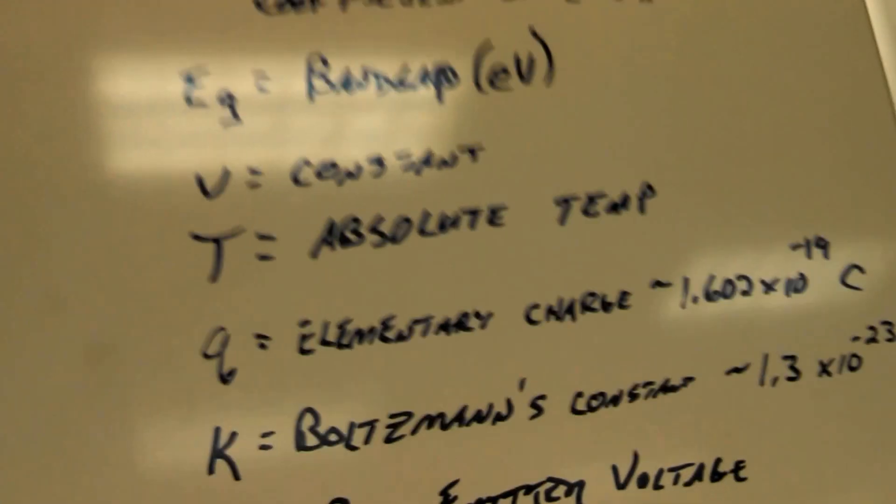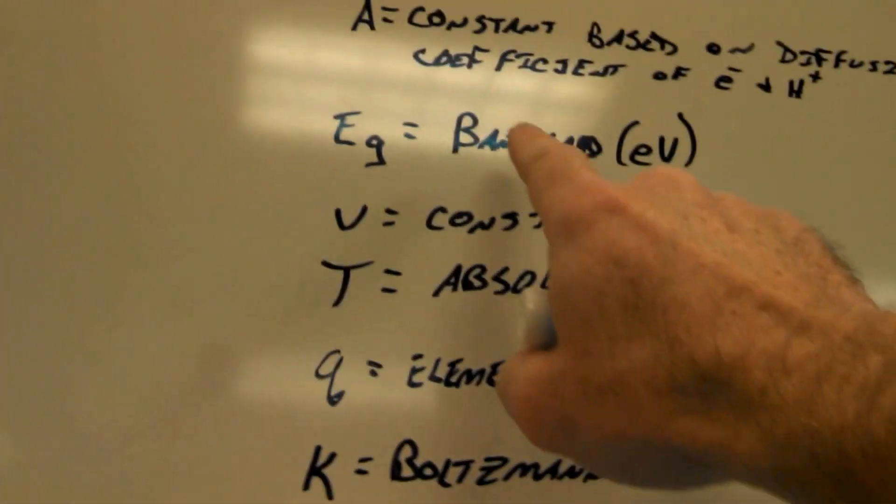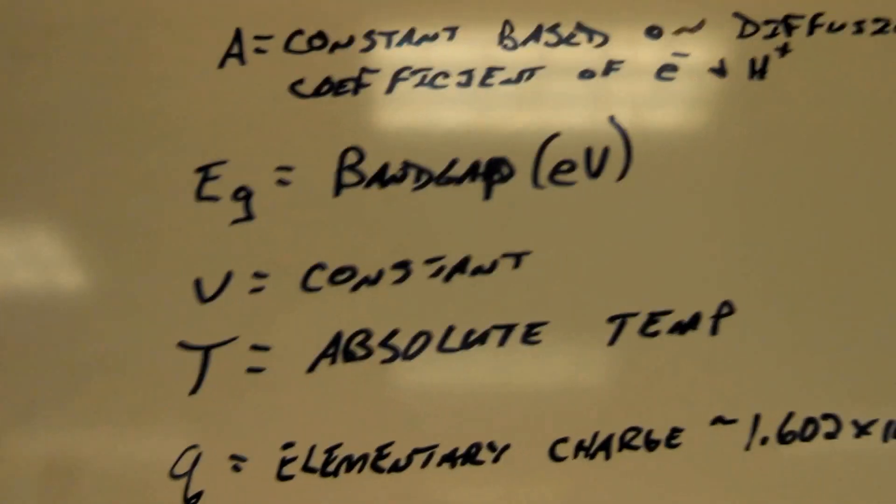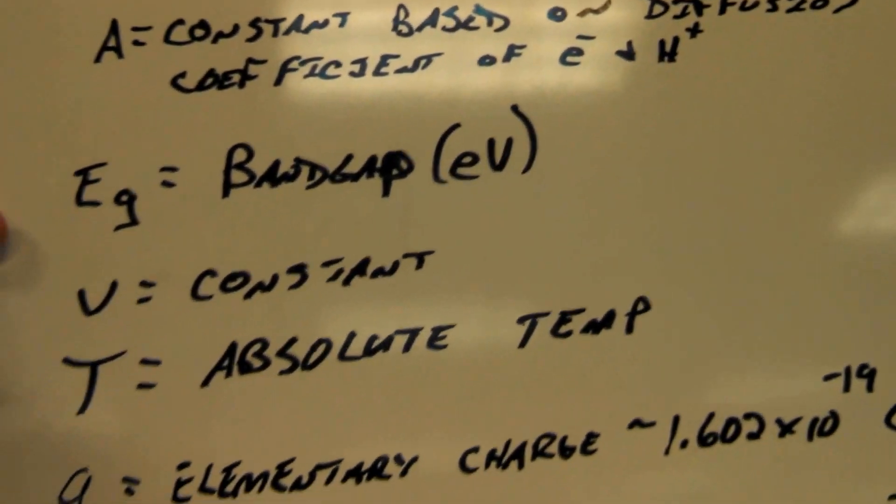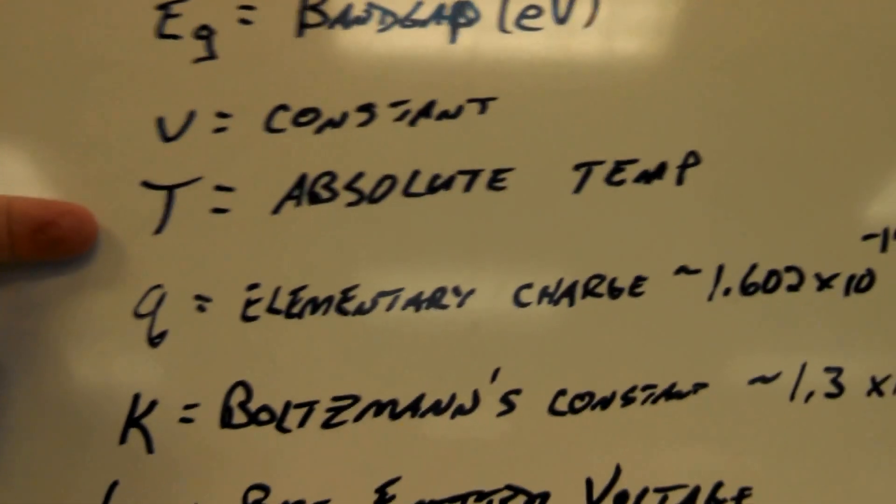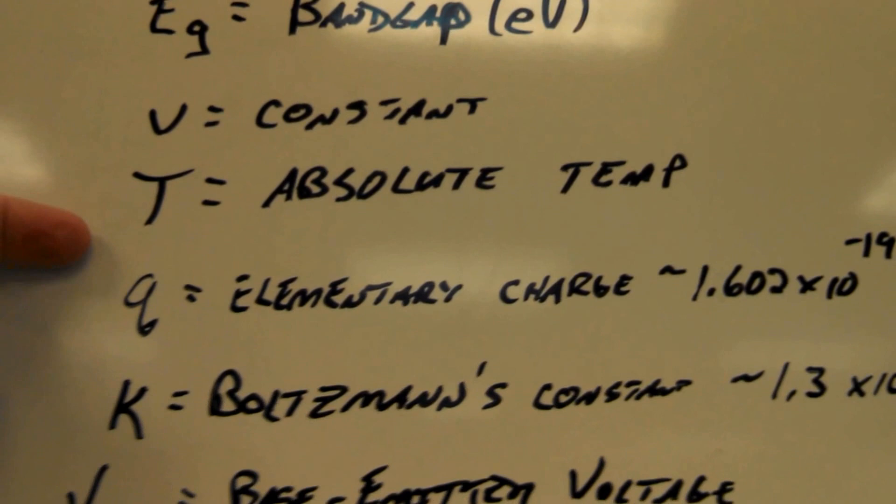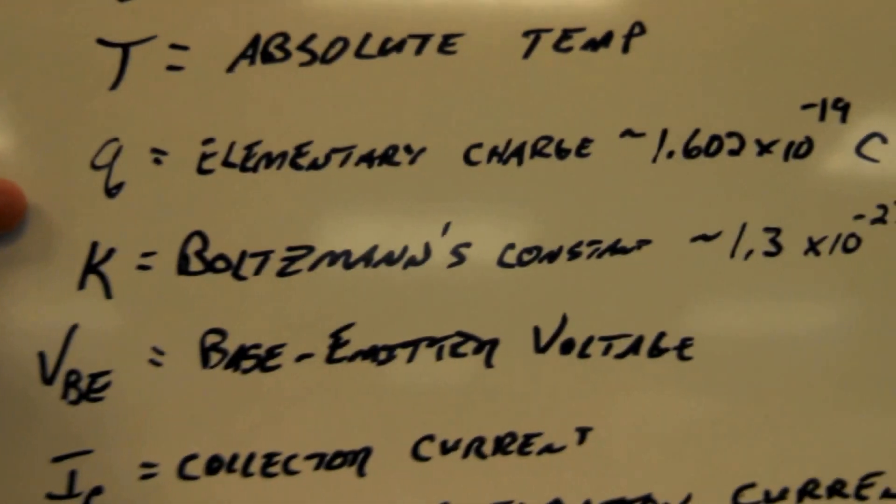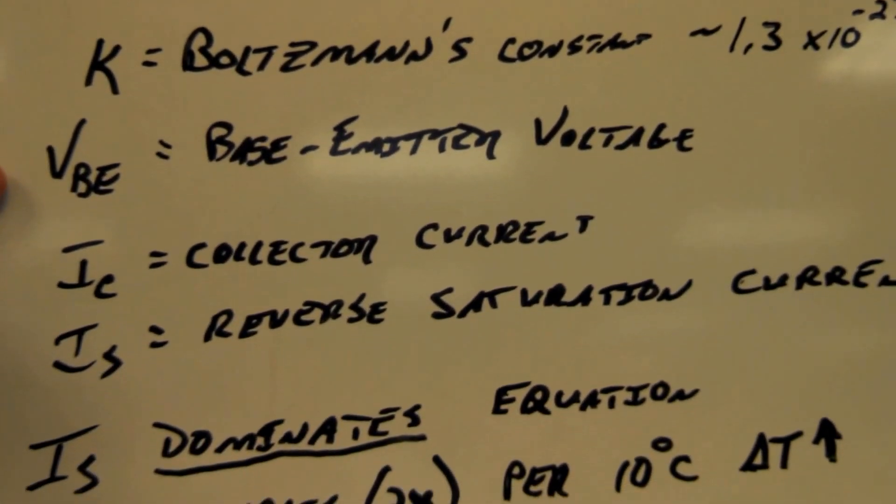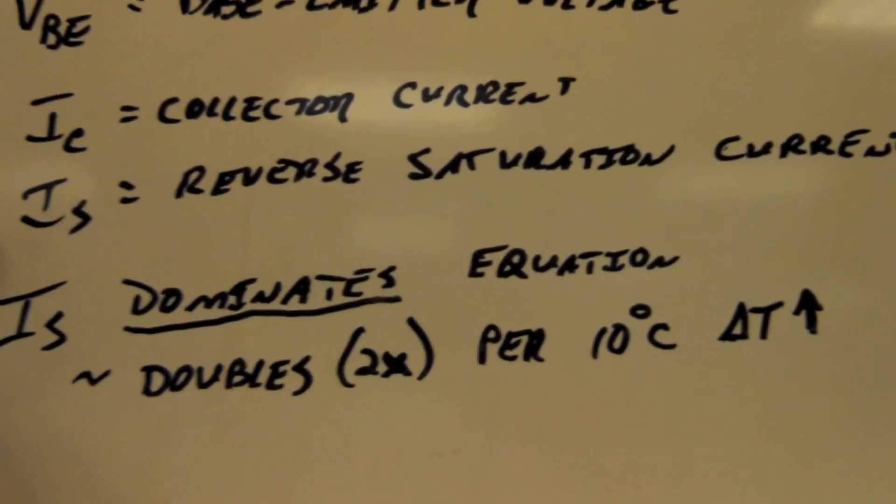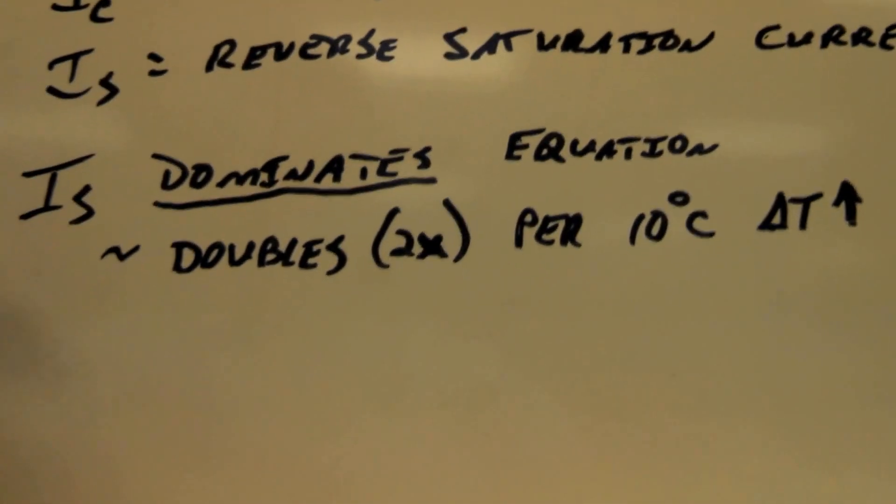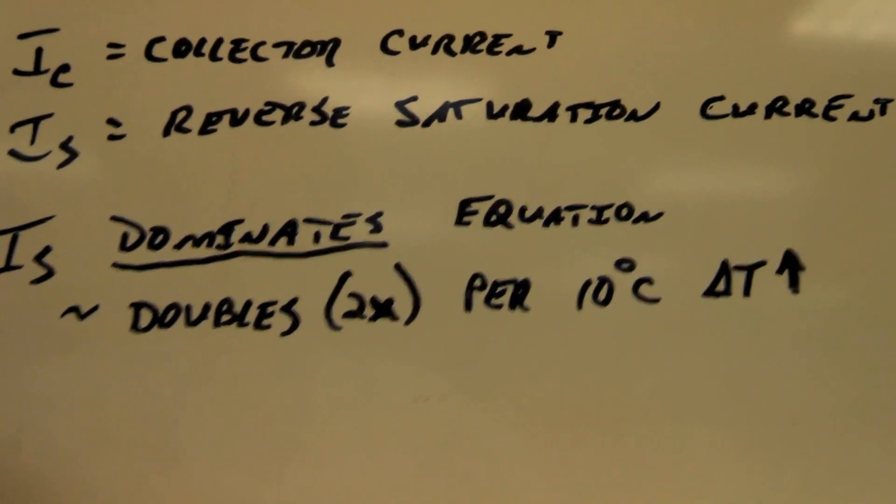So when we go through and we figure this all out, so here's the definitions. A, EG, V is some constant, T is absolute temperature. Q is the elementary charge of an electron. K is Boltzmann's constant. VBE, IC, IS. What we find in the end is that IS dominates this equation.